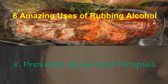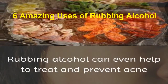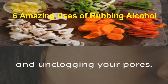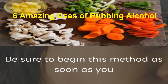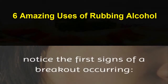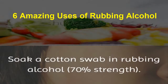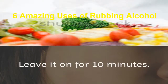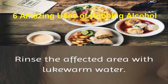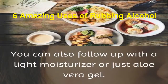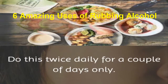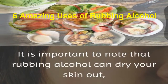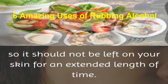3. Prevents Acne and Pimples. Rubbing alcohol can help to treat and prevent acne and pimples by killing the germs, soothing your skin, removing any dirt and unclogging your pores. Be sure to begin this method as soon as you notice the first signs of a breakout occurring. Soak a cotton swab in rubbing alcohol, 70% strength. Dab it on the affected area gently. Leave it on for 10 minutes. Rinse the affected area with lukewarm water. You can also follow up with a light moisturizer or aloe vera gel. Do this twice daily for a couple of days only. Note that rubbing alcohol can dry your skin out, so it should not be left on your skin for an extended length of time.